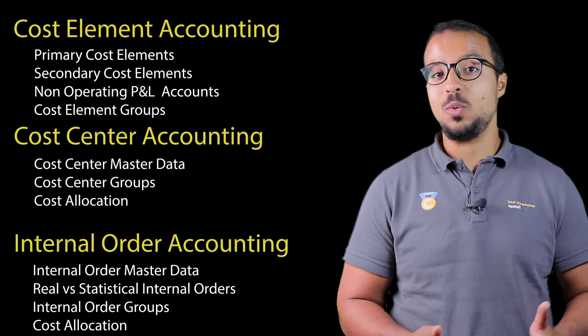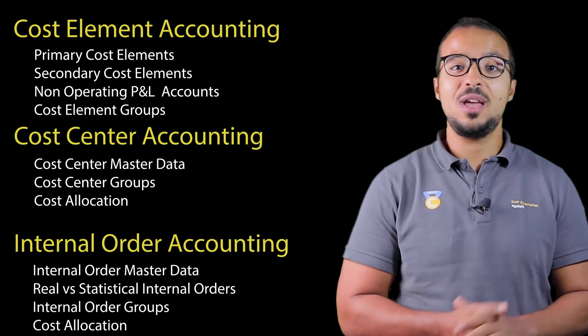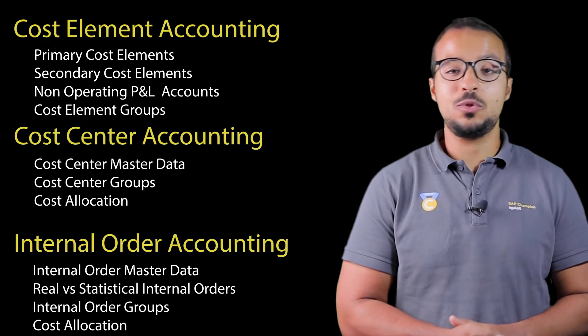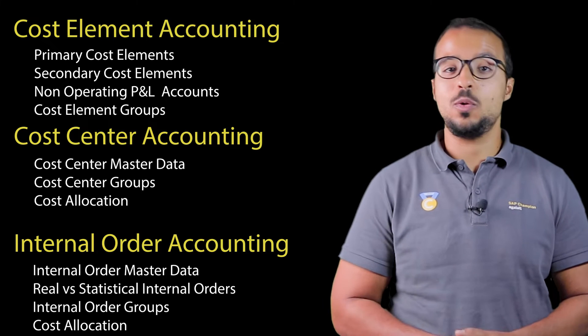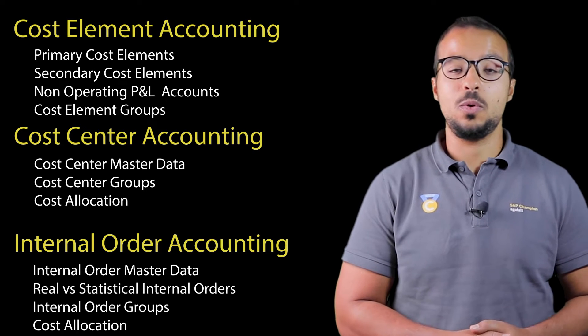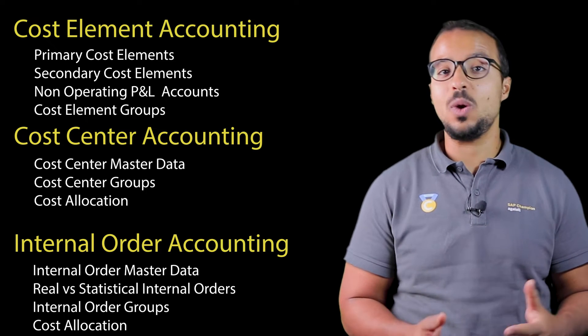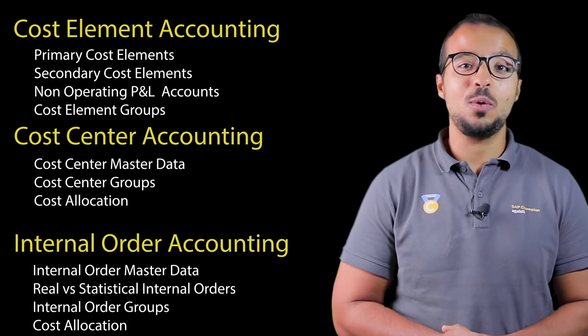So how can we allocate costs based on fixed percentages, fixed amounts, number of employees, space of buildings, or sales revenue, and so on. And for internal order accounting,